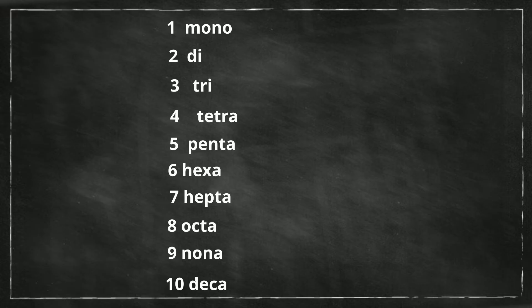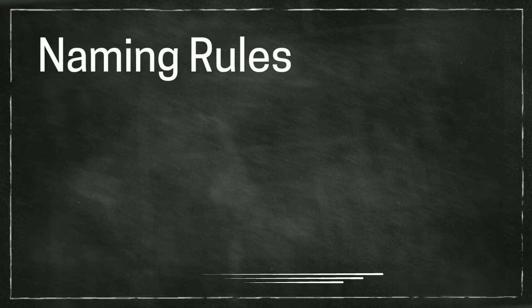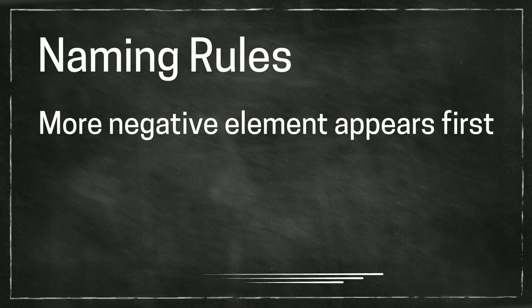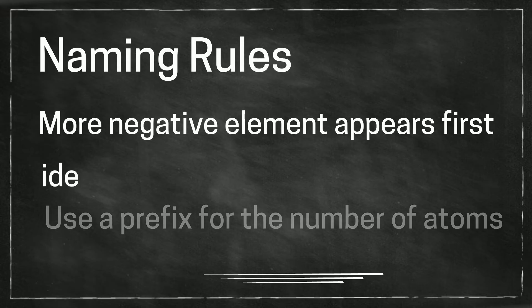Okay, let's get started with naming some, but first a couple of rules. The more negative element appears first. The second element is named following the first element, but its ending becomes ide. You use a prefix to name the number of atoms.